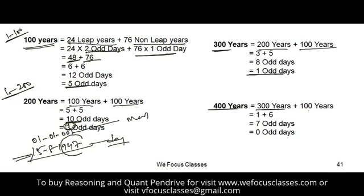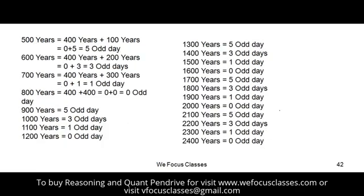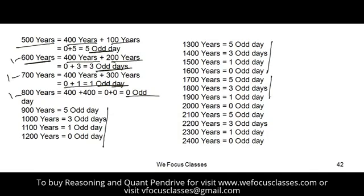For 400 years, 300 plus 100 would be 1 plus 5, but the 400th year is itself a leap year, so we take 6 instead of 5 for that last century, giving 0 odd days. Continuing the pattern: 500 years gives 5, 600 years gives 3, 700 years gives 1, 800 years gives 0 odd days. So the cycle repeats as 5, 3, 1, 0.